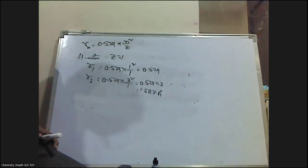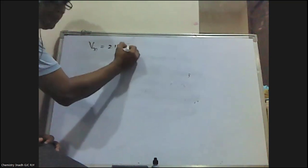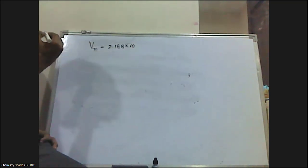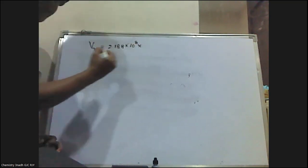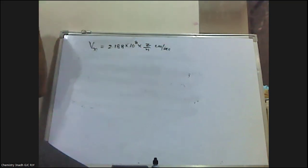The next question: if the velocity of an electron in the second orbit of the hydrogen atom is x, then the velocity in the fourth orbit is? In my previous video, I derived that the velocity of an electron in its nth Bohr orbit is: vn = 2.188 × 10⁸ × z/n centimetres per second.